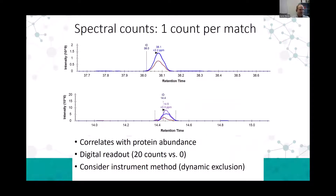Let's try a quick survey: has anyone heard of spectral counts? Has anyone used spectral counting in their experiments? I'm seeing a few hands—that's good. Maybe five or seven years ago, this was our go-to method, even though at the time we would say it has its caveats. It was maybe not the preferred method, but for the longest time it was a quick and simple readout of the abundance of proteins.